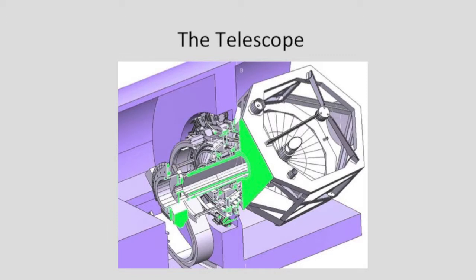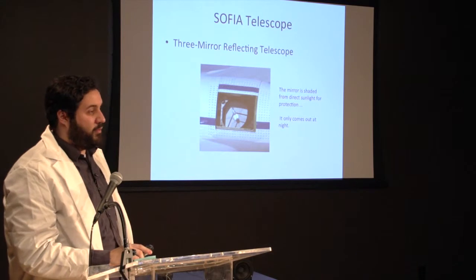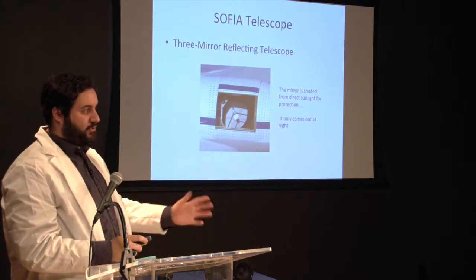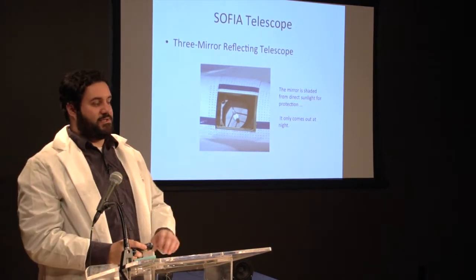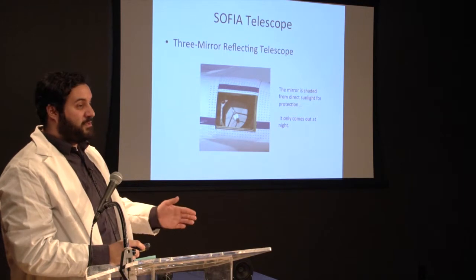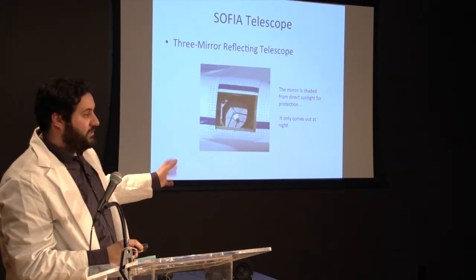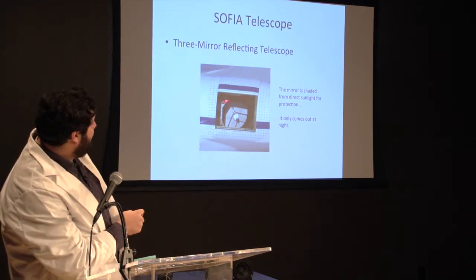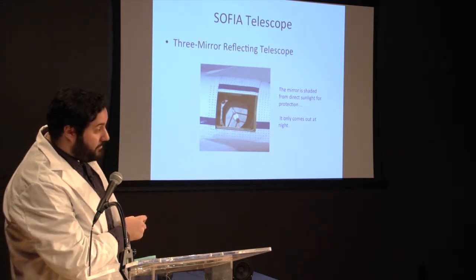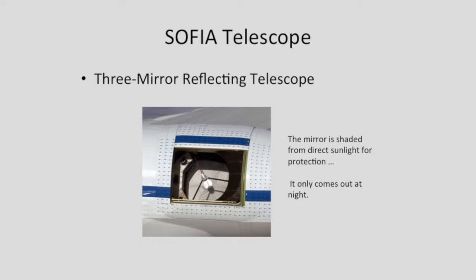The telescope we've been talking about is a really fascinating and important piece of equipment for NASA and for science in general. This three-mirror reflecting telescope actually only comes out at night — it's a really delicate piece of equipment. It's protected from sunlight, so you'll never see a photo of the telescope itself outside of ones provided by NASA. In this test flight image you can see it's covered with a canvas sheet. If you were to look at it, you would see your reflection — it's a huge mirror. The bay door built in here is closed during takeoff and landing and only opens up once the appropriate altitude is reached.